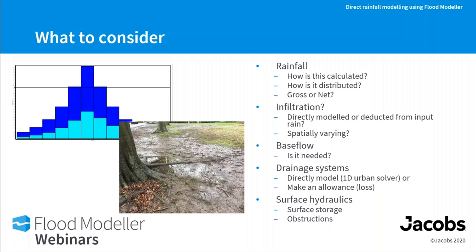Infiltration is another key consideration — not all water that hits the ground will run off; much is infiltrated into the subsurface. You can model this directly within the 2D hydraulic model, removing water from cells, or deduct it as an input reduction from gross rainfall. If you need spatially varying losses, direct modelling of infiltration is required. Base flow is also relevant, particularly for NFM studies where total catchment outflow matters. The subsurface hydrology component can be calculated using rainfall runoff models within Flood Modeller.